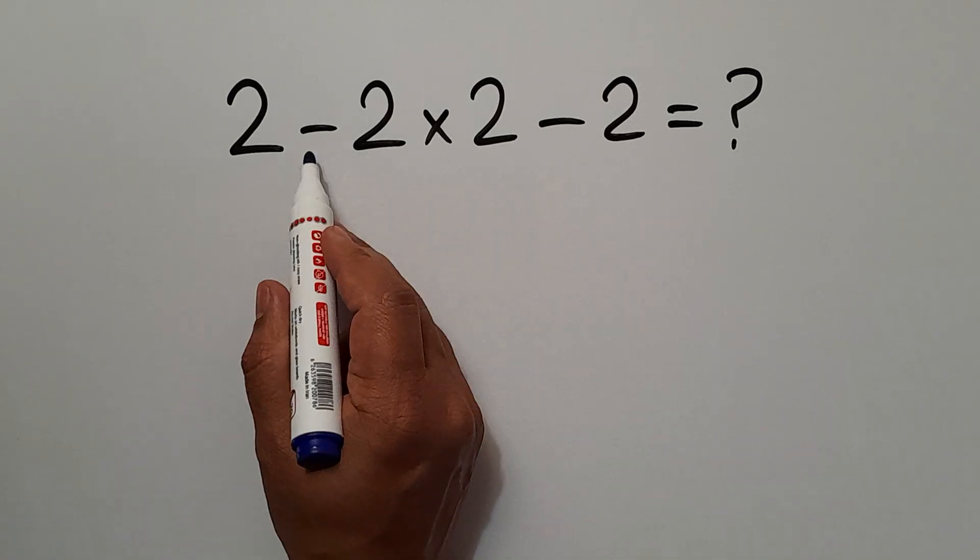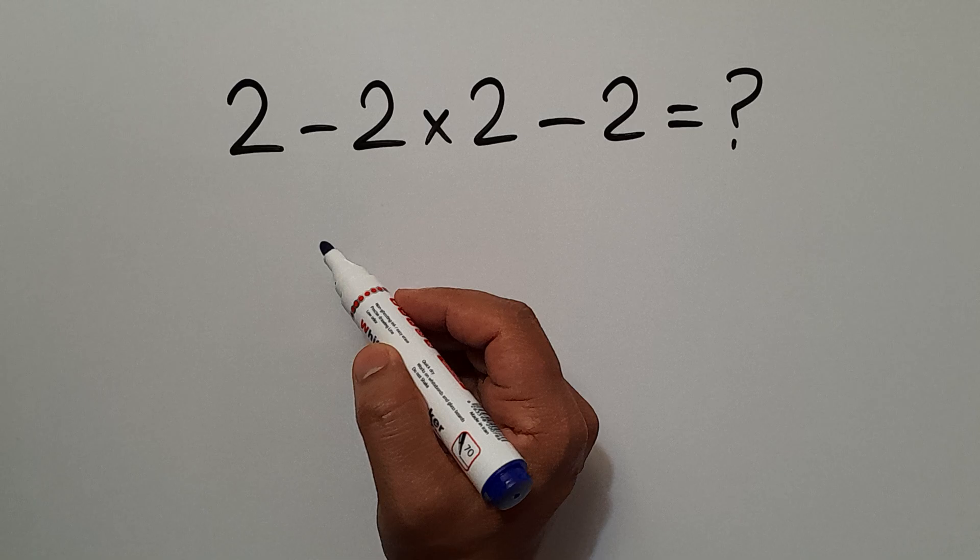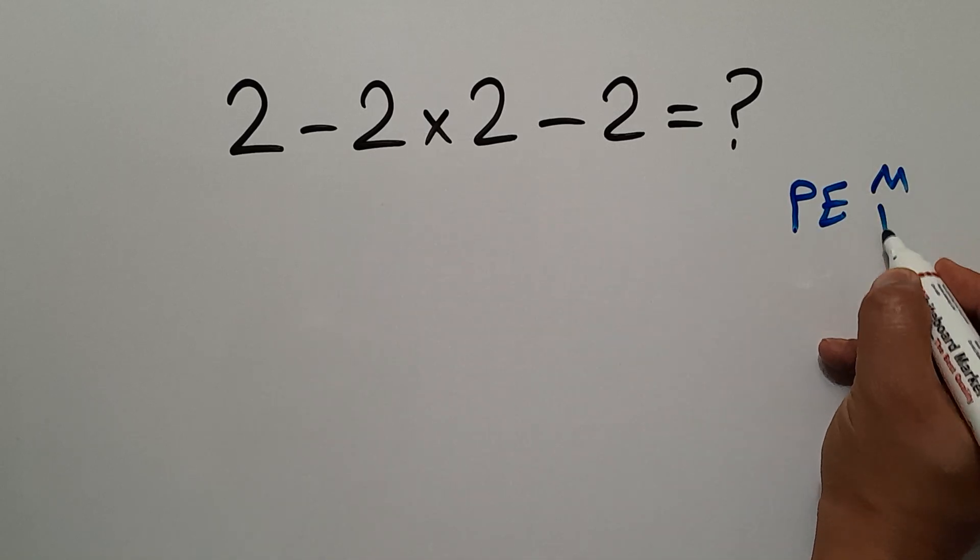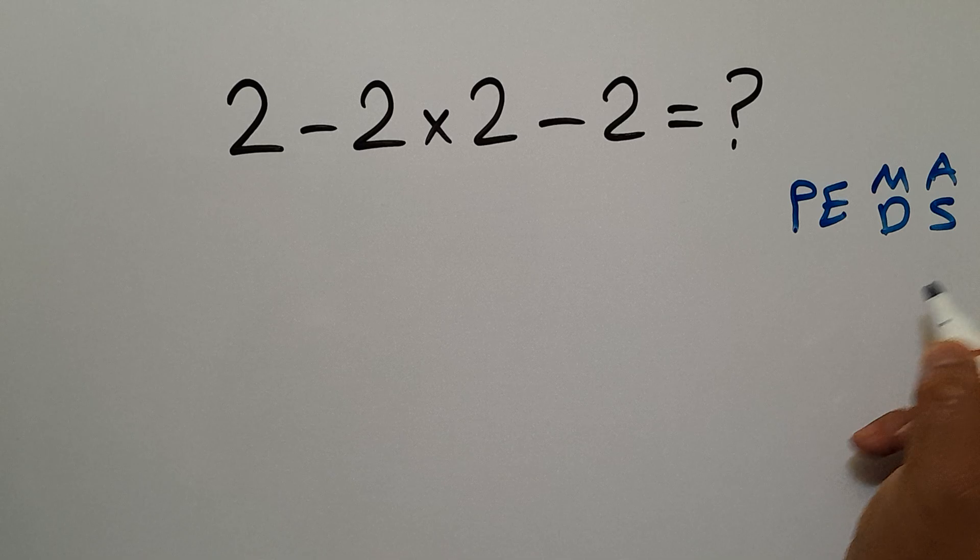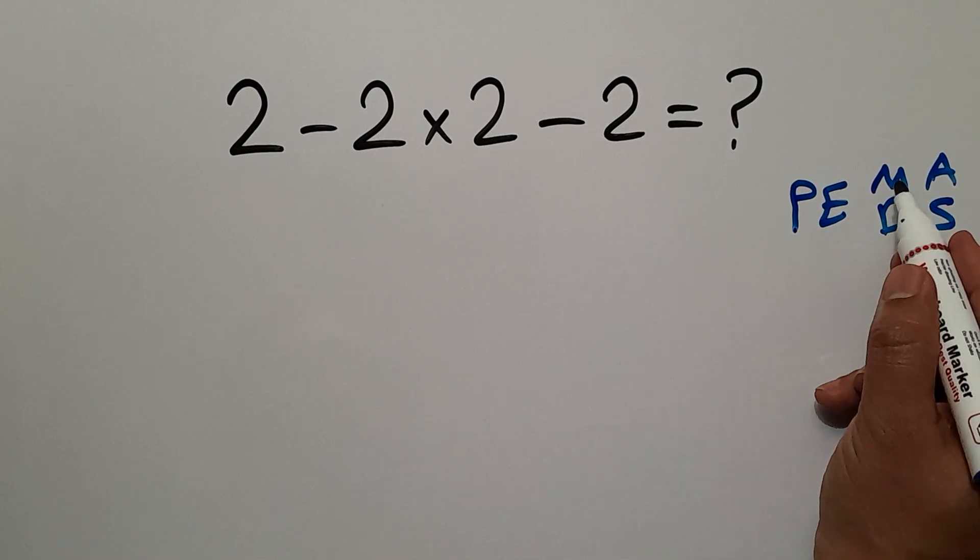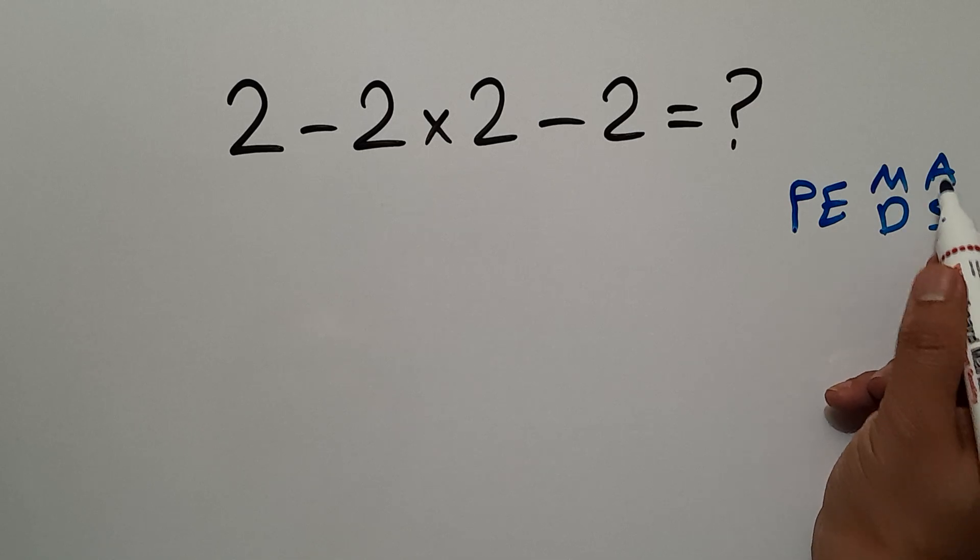In this expression, we have two subtractions and one multiplication. According to the order of operations, which is PEMDAS, P stands for parentheses, E stands for exponents, M and D stands for multiplication and division, and A and S stands for addition and subtraction.